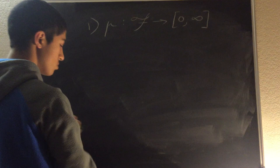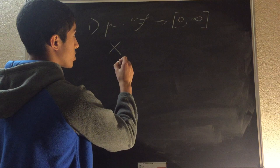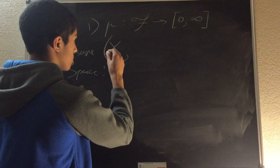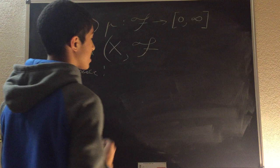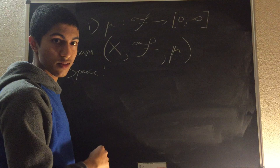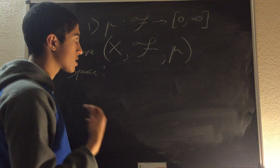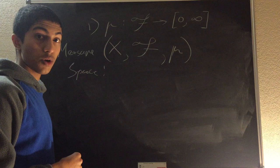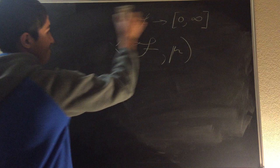Now that we've defined a measure mu, we can define a measure space, which looks like this: a set X, a sigma-algebra F on X, and a measure mu which acts on our sigma-algebra. Together, this forms a measure space, which serves to describe your tools and how to work on problems that will arise in the future. Now that we've defined a measure space, we can define something called a probability space, which will be the last topic for today.